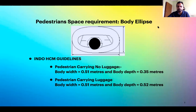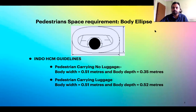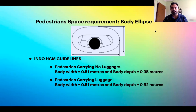There is one term known as pedestrian space requirements, also called the body ellipse — how much space is required by one person. This depends on the dimensions of a person, which vary from individual to individual. The Indian Highway Capacity Manual (HCM) does research on levels of service and various other pedestrian parameters. This Indian HCM has given certain guidelines specifying the particular dimensions for pedestrian space requirements.